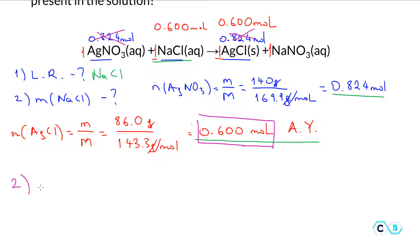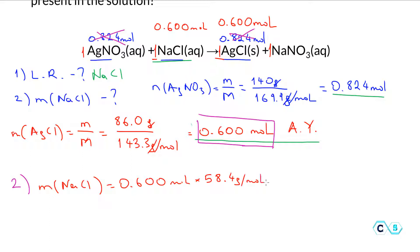So the mass of the sodium chloride would be equal to 0.600 moles multiplied by 58.4 grams per mole. Canceling units, this gives us 35.0 grams of sodium chloride.